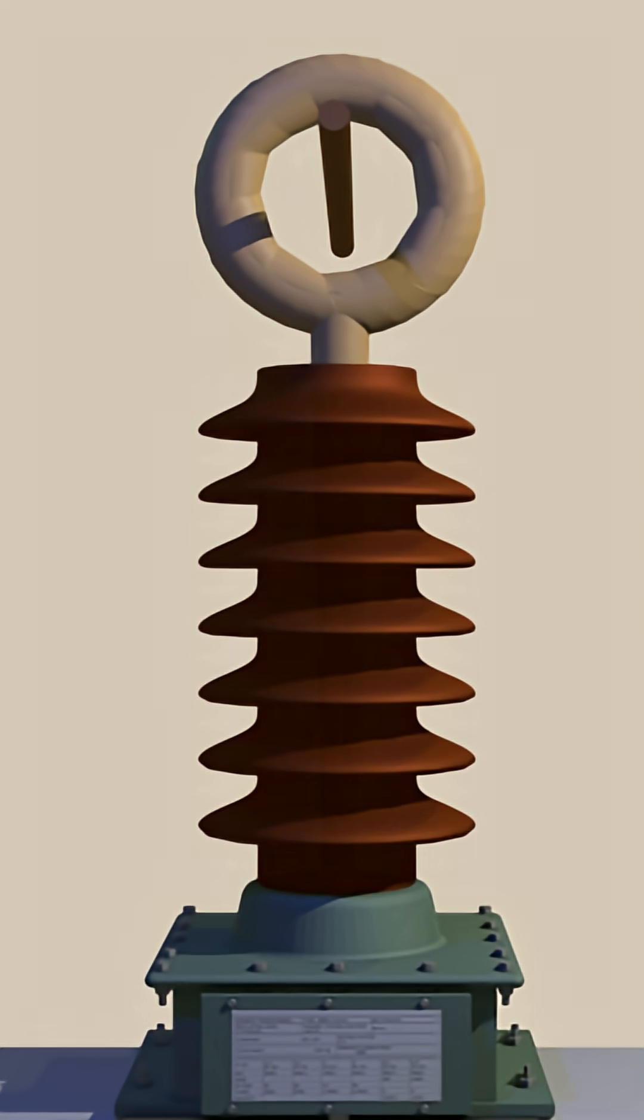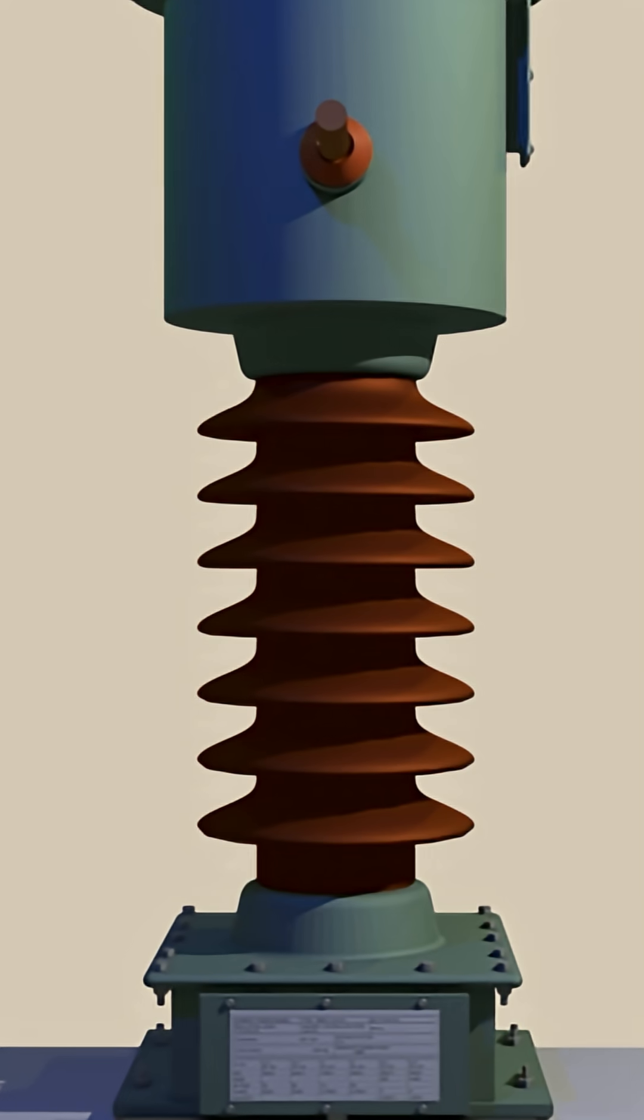This is the porcelain housing. Now the secondary winding, core and primary all together are covered with a steel or iron tank.